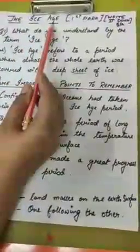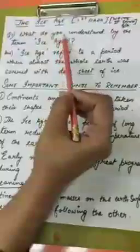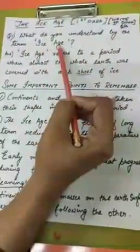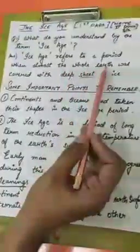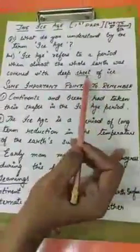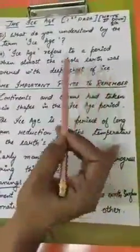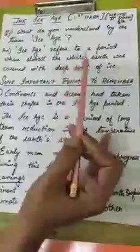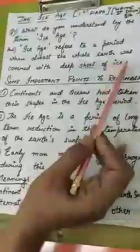From The Ice Age, first paragraph — write down the question and answer. Question 1: What do you understand by the term Ice Age? Ice Age refers to a period when almost the whole Earth was covered with a deep sheet of ice. Ice Age means the whole Earth is covered with a deep layer of ice.